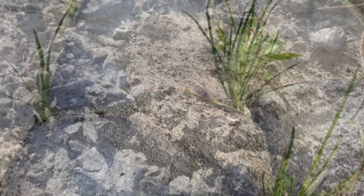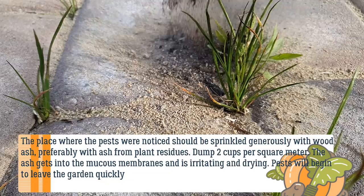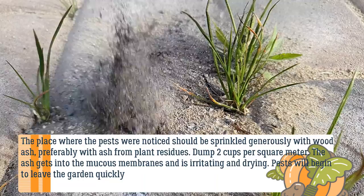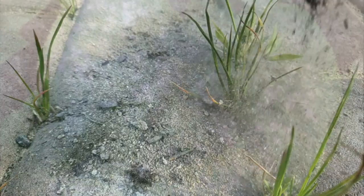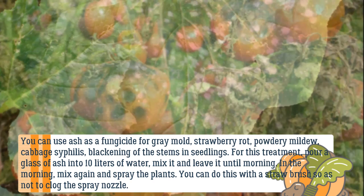Dry ash also fights ants. The place where ants are noticed should be sprinkled generously with wood ash — preferably ash from plant residues — at about two cups per square meter. The ash gets into mucous membranes, is irritating and drying, and pests will quickly begin to leave the garden. You can also use ash as a fungicide for gray mold, strawberry rot, powdery mildew, cabbage disease, and blackening of stems and seedlings.